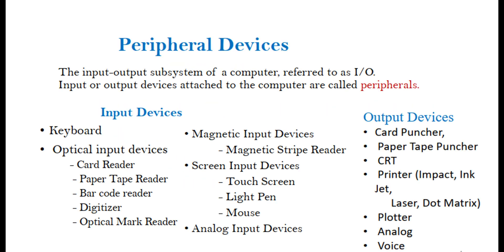Peripheral Devices: The Input-Output subsystem of a computer is referred to as I/O. Input or Output devices attached to the computer are called peripherals. Input devices include: Keyboard, Optical Input Devices, Card Reader, Paper Tape Reader, Barcode Reader, Digitizer, Optical Mark Reader, Magnetic Stripe Reader, Touch Screen, Light Pen, Mouse, and Analog Input Devices.